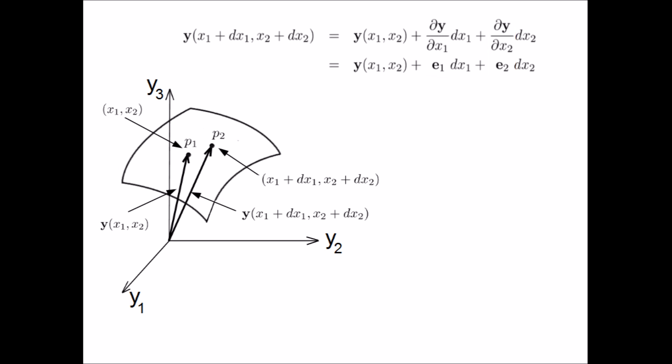The difference between the position vectors gives us the distance vector ds between the two points in terms of e1 and e2.